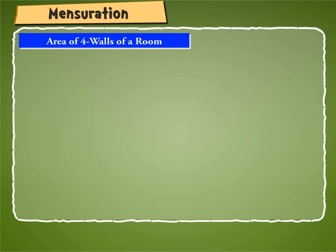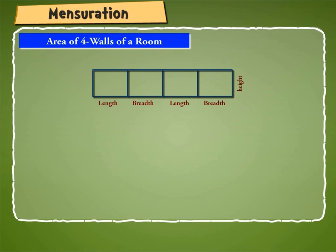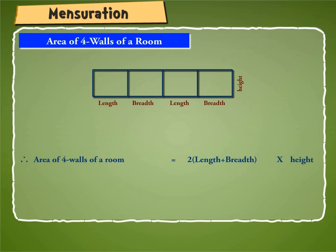The area of four walls of a room. The figure given on the screen represents the net of the four walls of a room. It is a rectangular piece whose length is 2 into (length plus breadth) and breadth is the height of the room. Therefore, the area of four walls of a room is equal to 2 into (length plus breadth) into height.